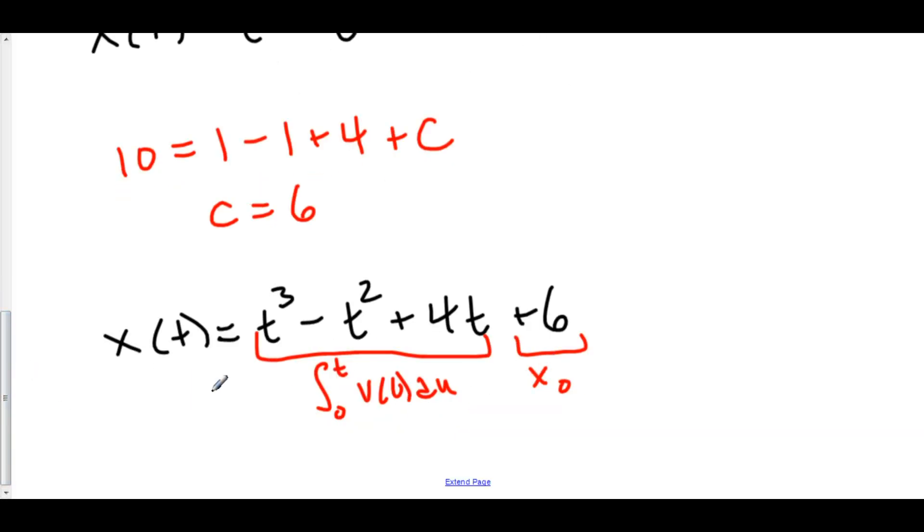So, for example, if we were to find the position at time t equals one, which they told us was ten, we know that my initial position is six, and from zero to one, my change in position is four. Four plus six gives us ten.